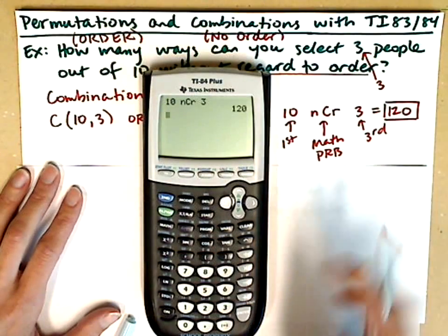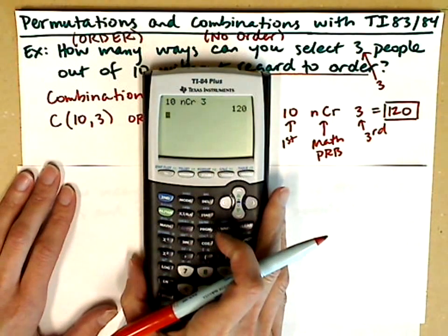So there are 120 ways to select 3 people out of 10.